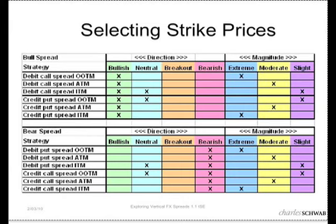Your goal when you establish a debit spread is always to have both options expire in the money. If I start out with a spread where both options are already in the money, then the stock doesn't have to go any higher at all — the two options are already positioned to earn their maximum gain with zero movement in the underlying index. It's a very conservative trade. But if I'm only moderately bullish and I use an at-the-money or out-of-the-money spread, I'm going to need a significant upside movement in the underlying index to make money. If I start out with both options already in the money, the index can go completely sideways and I'll still make money.